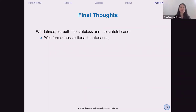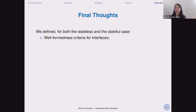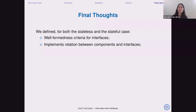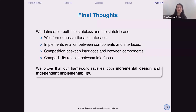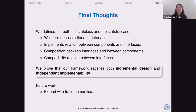To summarize: in the paper, we define for both the stateless and stateful cases a notion of well-formedness criteria for interfaces. We introduce the notion of property that allows the designer to decide where to put the responsibility to specify a flow — balancing between assumptions and guarantees. We define what an implementation means with respect to an interface, define composition and compatibility, and most importantly, prove that our framework satisfies both incremental design and independent implementability. Future work will extend this with trace semantics to allow tailored semantics and native reasoning with trace semantics.